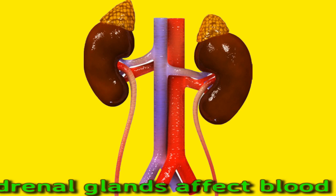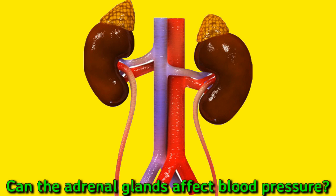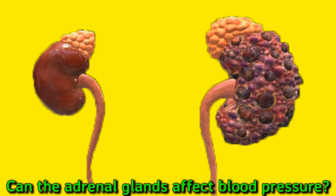Several conditions can cause a person's adrenal glands to overproduce hormones, including primary aldosteronism, also called Conn's syndrome. Primary aldosteronism is a condition where a person's adrenal glands produce too much aldosterone, and this can cause them to develop hypertension.